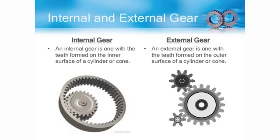An external gear is one with teeth formed on the outer surface of a cylinder or cone. Conversely, an internal gear is one with the teeth formed on the inner surface of a cylinder or cone. Both types of gears are widely used in pumps.